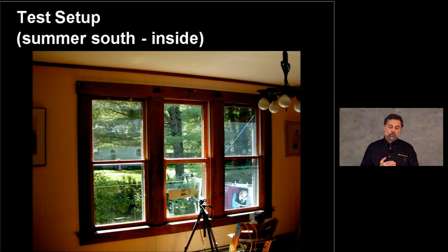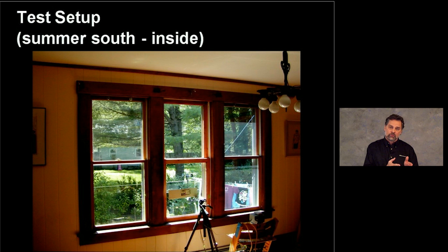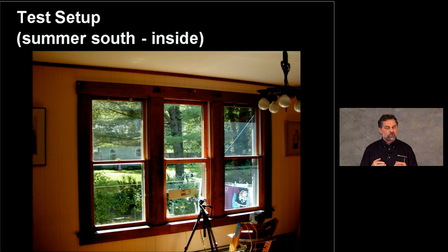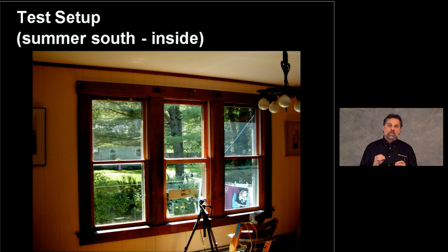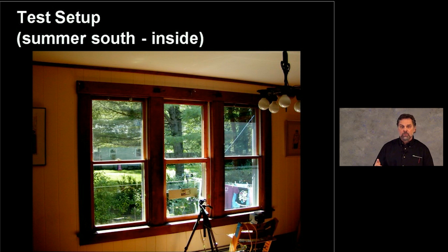We're still processing data from last winter and working on changing the test setup for more standardized results. We also wanted to do a second round of testing under summer conditions. We moved from the single window in the southeast corner of the living room to a bank of three windows on the south side, because these get unobstructed solar view during summer. In summer, window attachments are all about rejecting solar heat gain and providing shade while maintaining view. This bank of three also allows simultaneous testing of one base case window with two different attachments side by side.